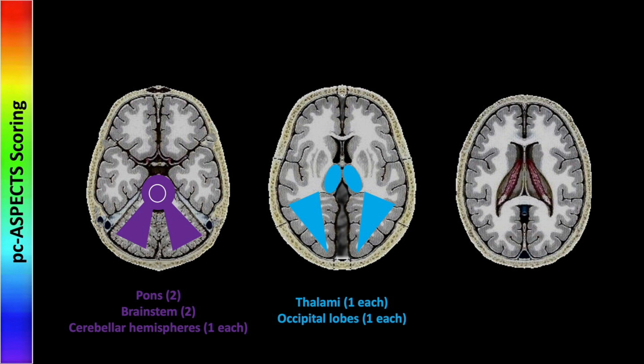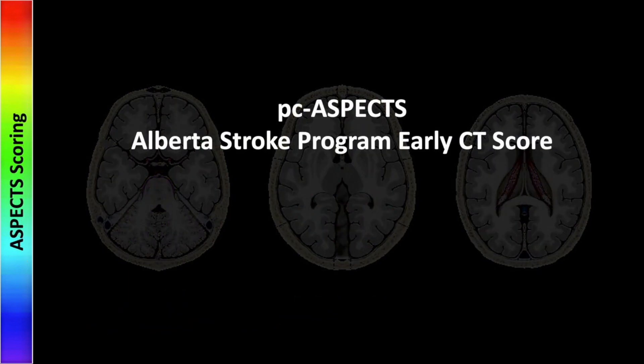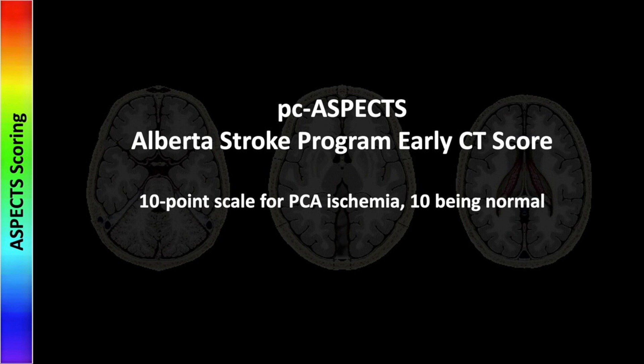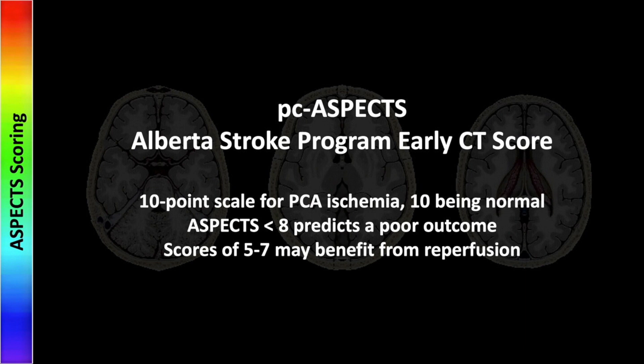You get a point for each one of these structures that is normal: the pons, brainstem, cerebellar hemispheres, thalami, and occipital lobes. The PC-ASPECTS scoring system is a 10-point scale with 10 being normal. An ASPECTS score of less than 8 predicts a poor outcome, but additional data suggests that scores of 5 to 7 may also benefit from reperfusion therapies.